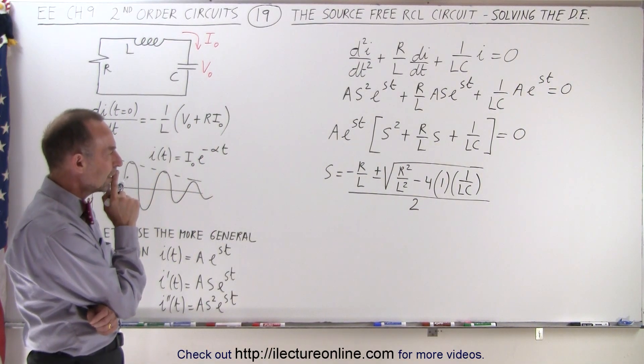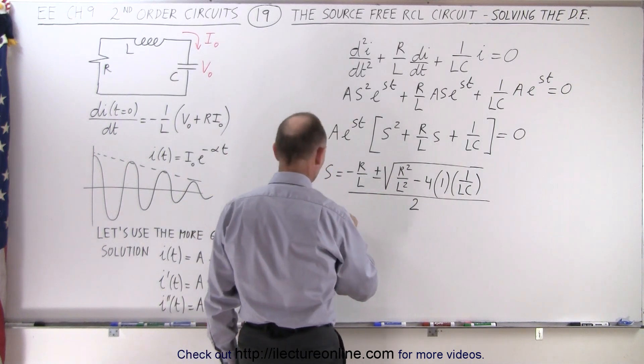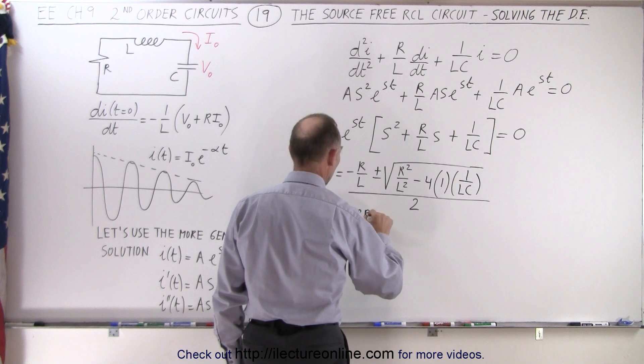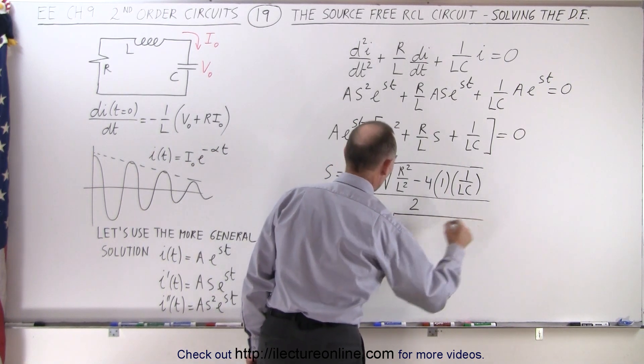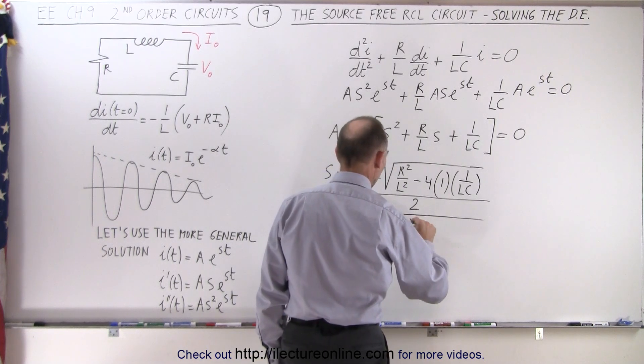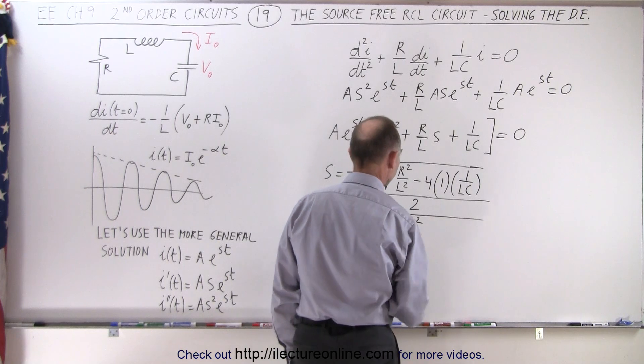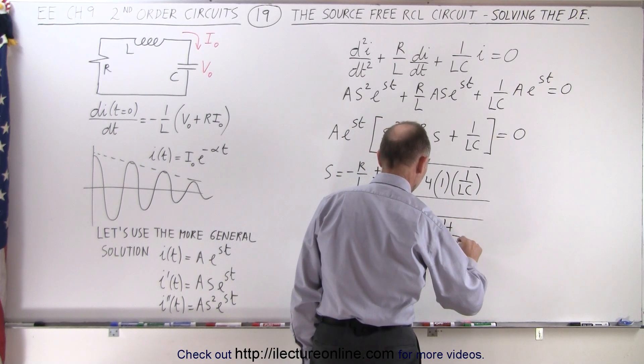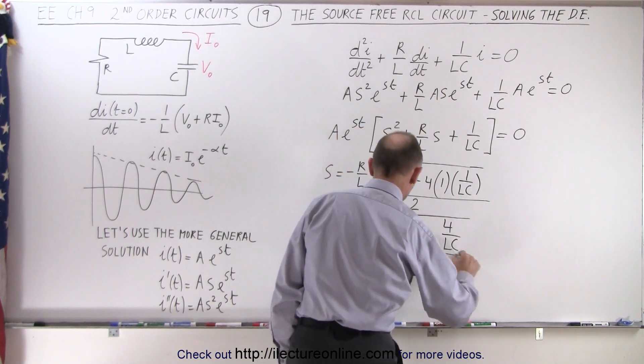Now the next thing we're going to do is we're going to write this as follows. So we have s is equal to minus 2r over 2l plus or minus the square root of 4r squared over 4l squared minus 4 over lc, all divided by 2.